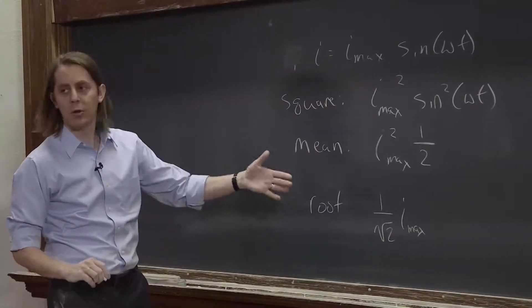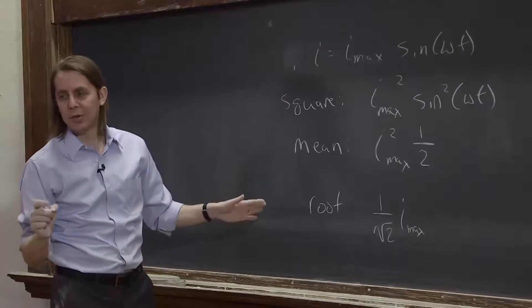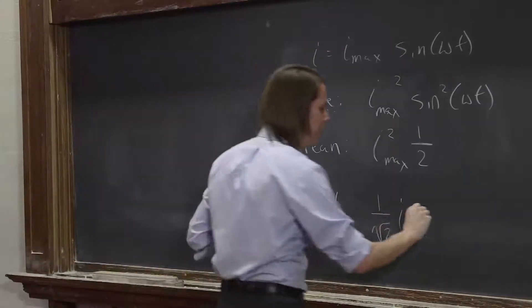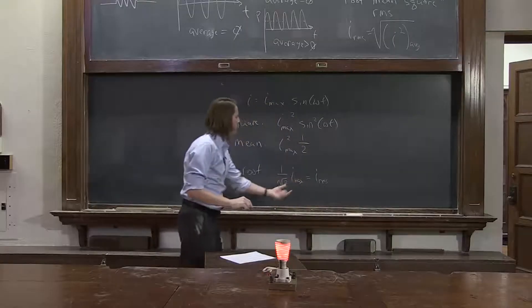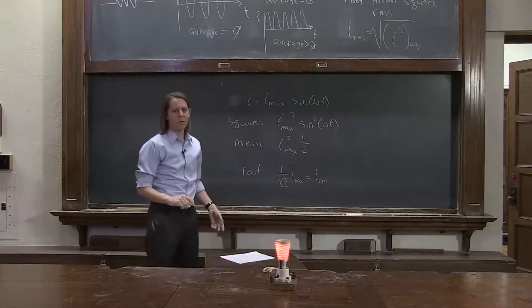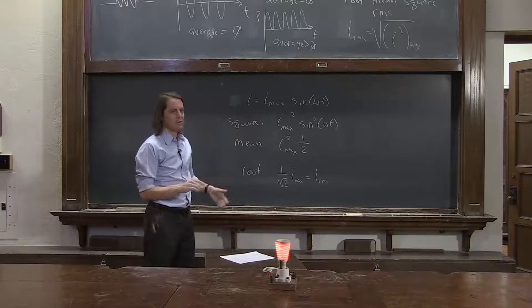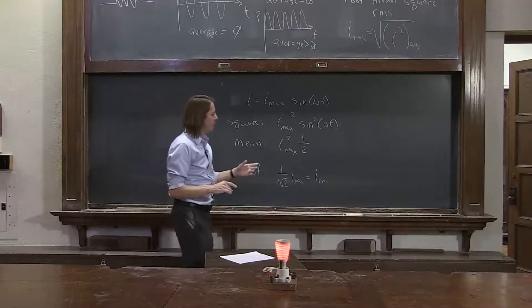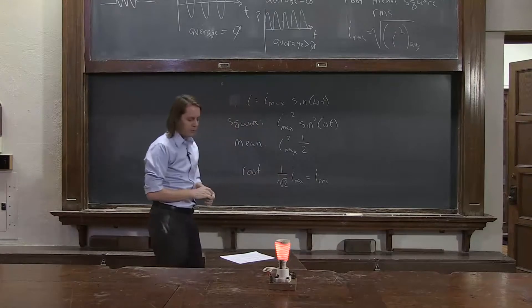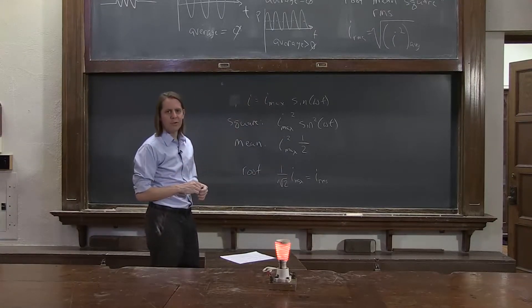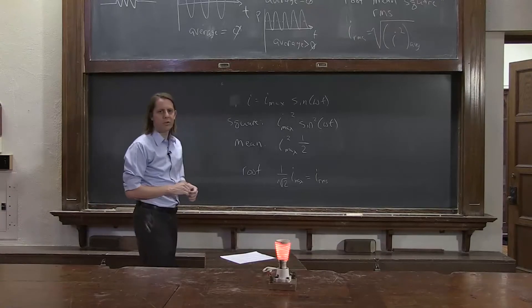And we'll get this as one over the square root of two I max. So for a sinusoidal current, and pretty much everything we're going to do is going to be sinusoidal, the I RMS is just the amplitude of the oscillation times one over the square root of two. Same thing for the voltage. The RMS delta V is the maximum delta V times one over the square root of two. So we'll be using lots of RMS currents and voltages as we analyze AC circuits.